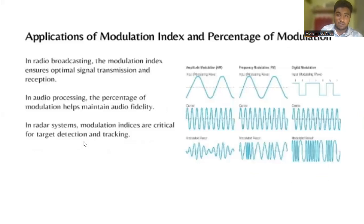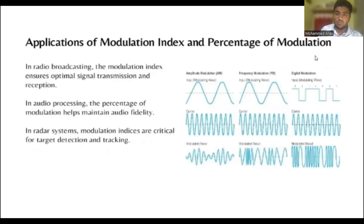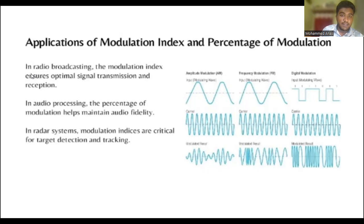Applications of modulation index and percentage of modulation: in radio broadcasting, the modulation index ensures optimal signal transmission and reception. In audio processing, the percentage of modulation helps maintain audio fidelity. In radar systems, modulation index is crucial for target detection and tracking.